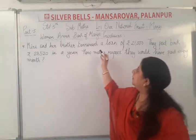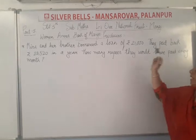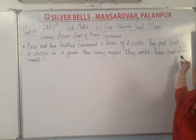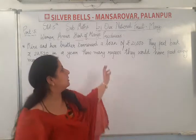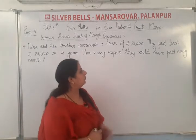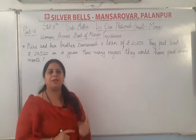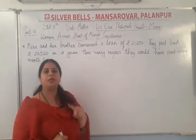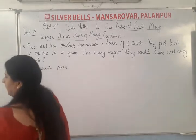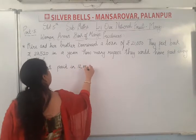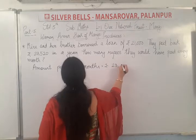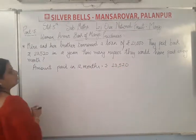Now the next sum: Meera and her brother borrowed a loan of Rs.21,000. They paid back Rs.23,520 in a year. How many rupees would they have paid every month? Meera and her brother took a loan of Rs.21,000 and paid back Rs.23,520. Amount paid in 12 months equals Rs.23,520.